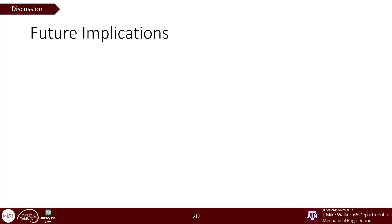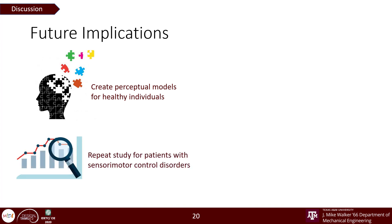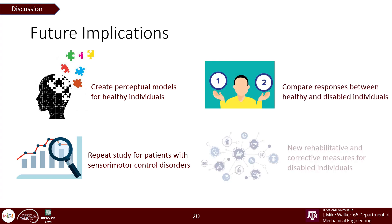Since our initial results present a promising avenue for newer research problems, we believe that this exploratory study could help us create perceptual models for healthy individuals, then repeat the same studies with people having sensory motor disorders, conduct the comparison between healthy and disabled individuals, and use this knowledge towards new rehabilitative and sensory motor corrective measures.